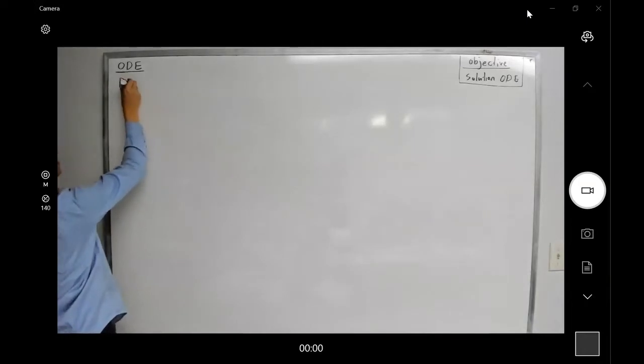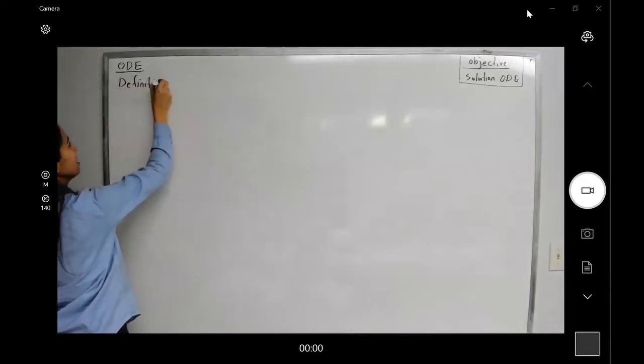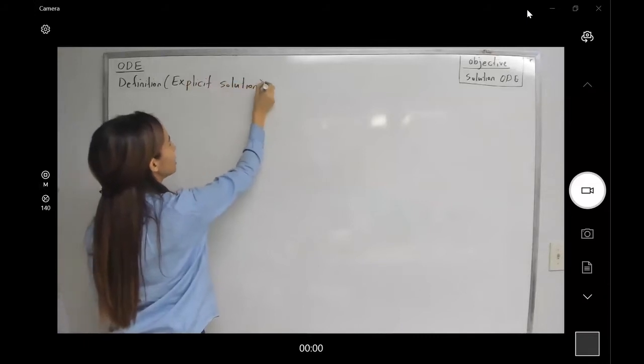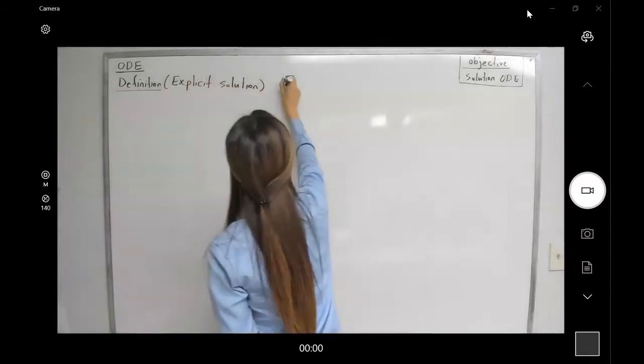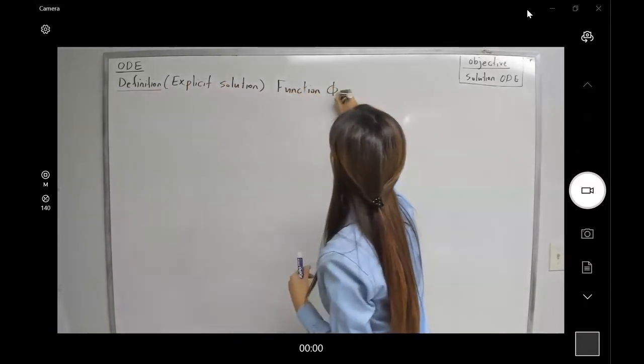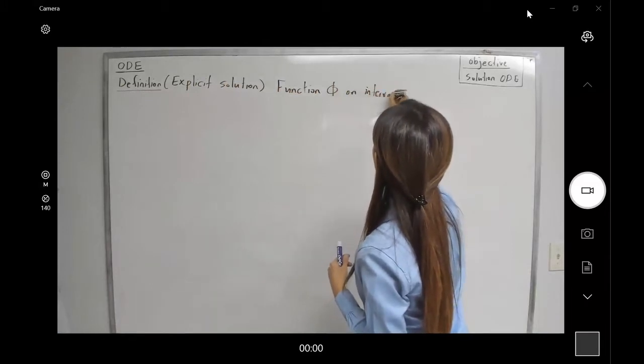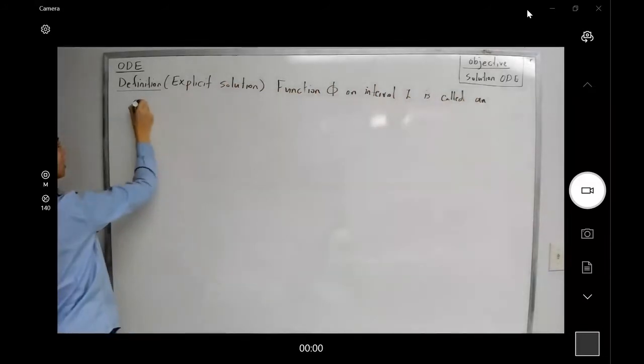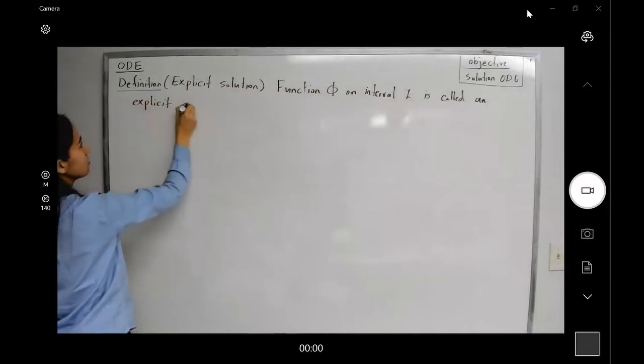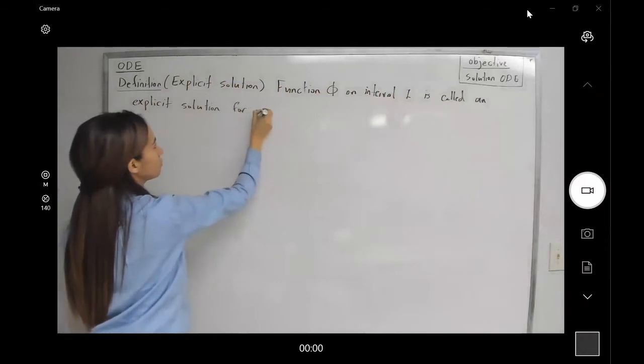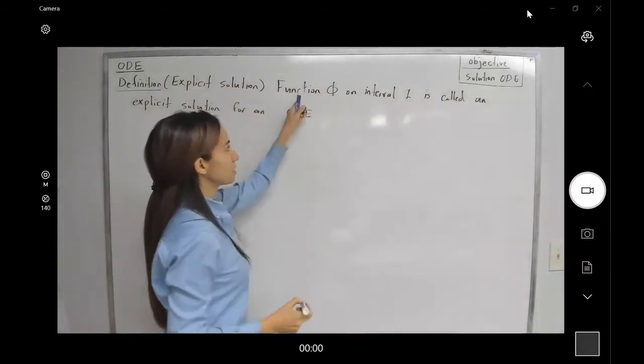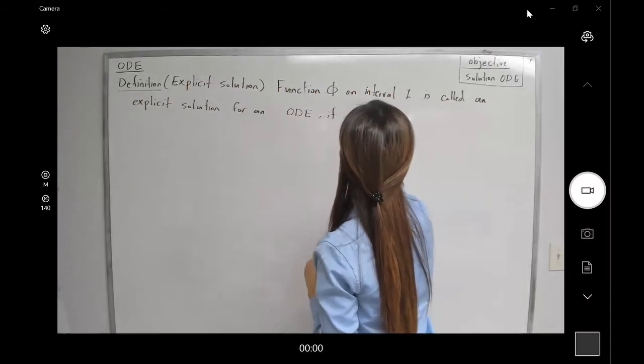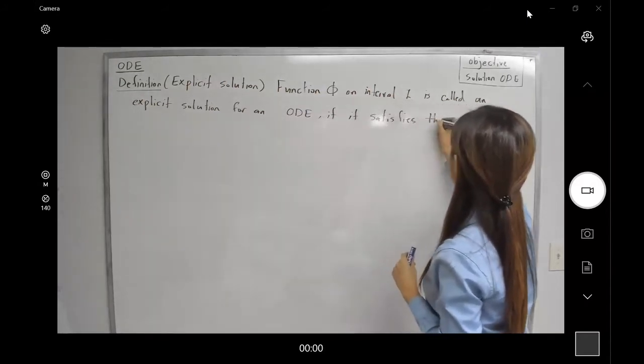Definition: Explicit solution to an ODE. In this case, we have a function phi on an interval I. It is called an explicit solution, or just the solution, for an ODE. Remember that this function must have derivatives if it satisfies the equation.